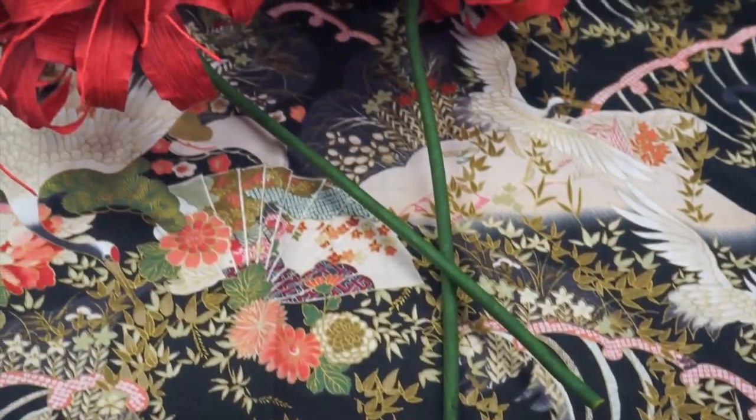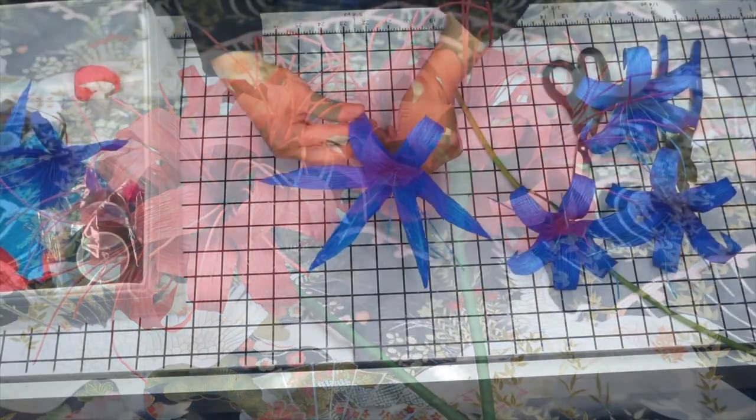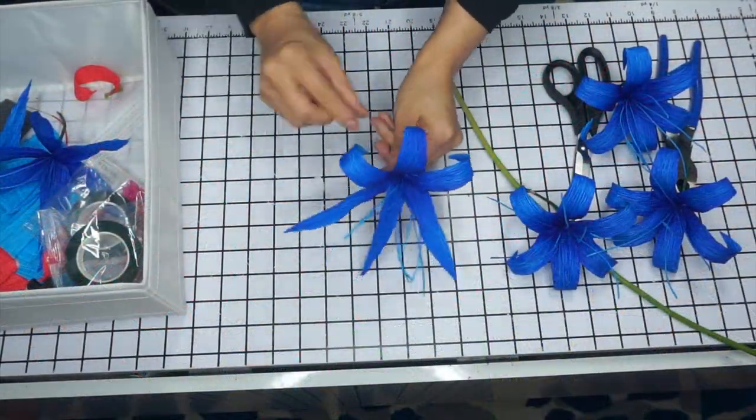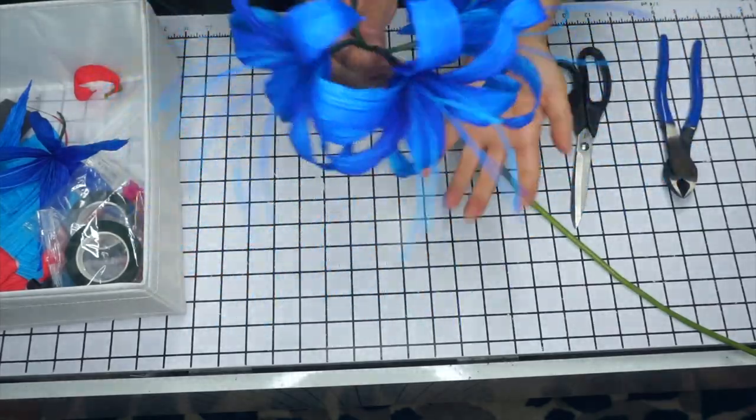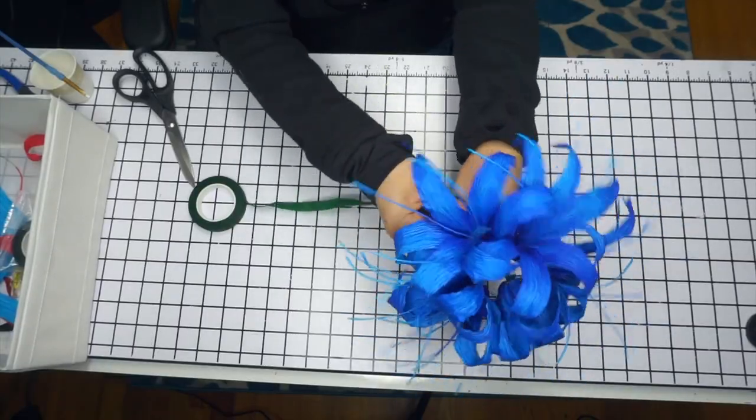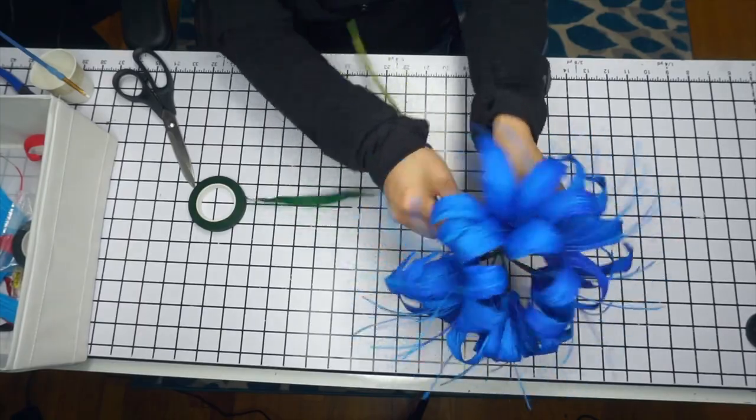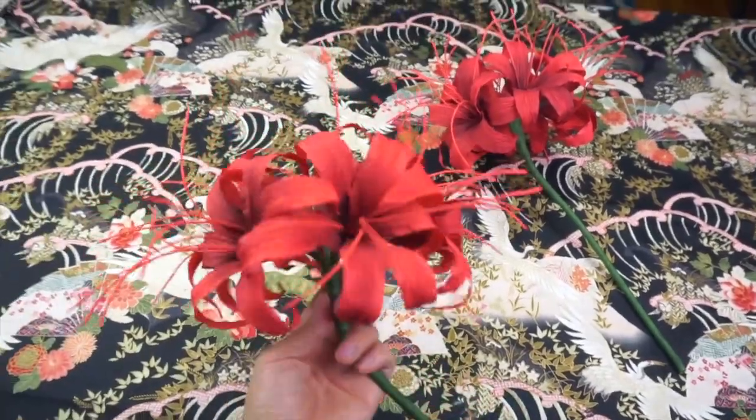Originally, I was only going to make one cluster of red spider lilies, but I thought about how important the blue spider lily is in Demon Slayer and especially to Muzan as a character, so I got super inspired and made a blue cluster of Higambana, as well as a second red cluster.